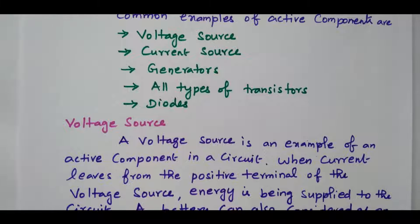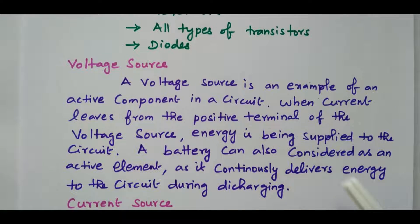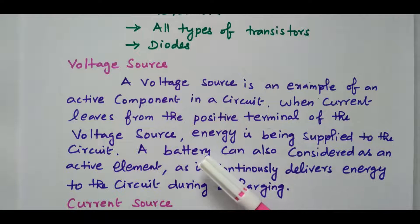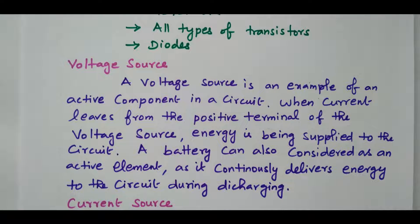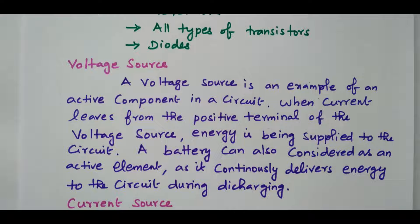The voltage source is an example of an active component. When current leaves from the positive terminal of the voltage source, energy is being supplied to the circuit. So when the voltage source is connected in the circuit, it is able to supply the energy into the circuit — that is why it is called an active component. Similarly, a battery is also considered an active component because it continuously delivers energy to the circuit during discharging.